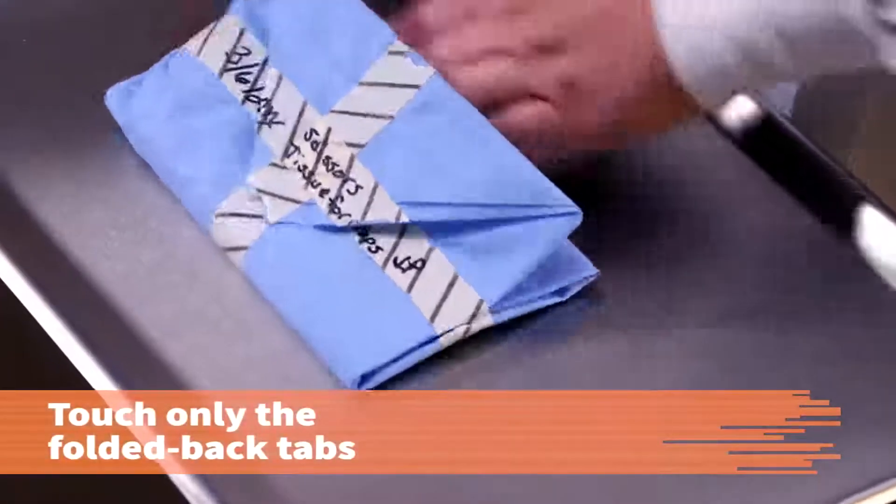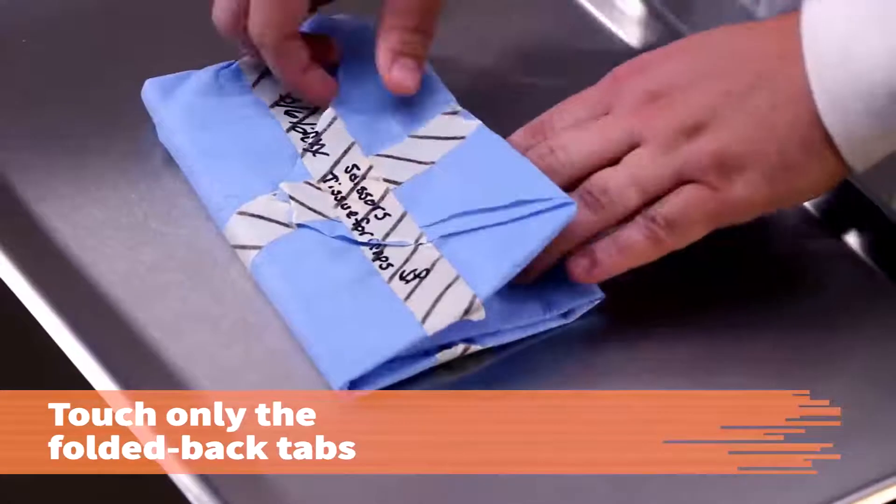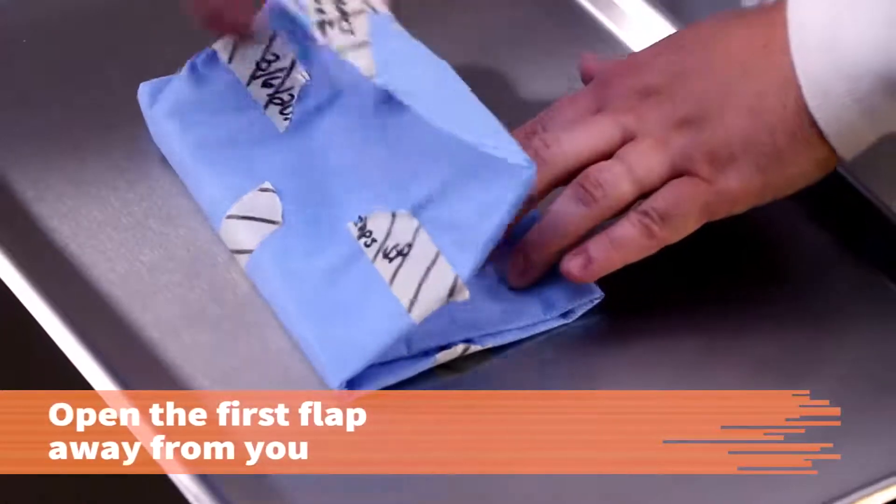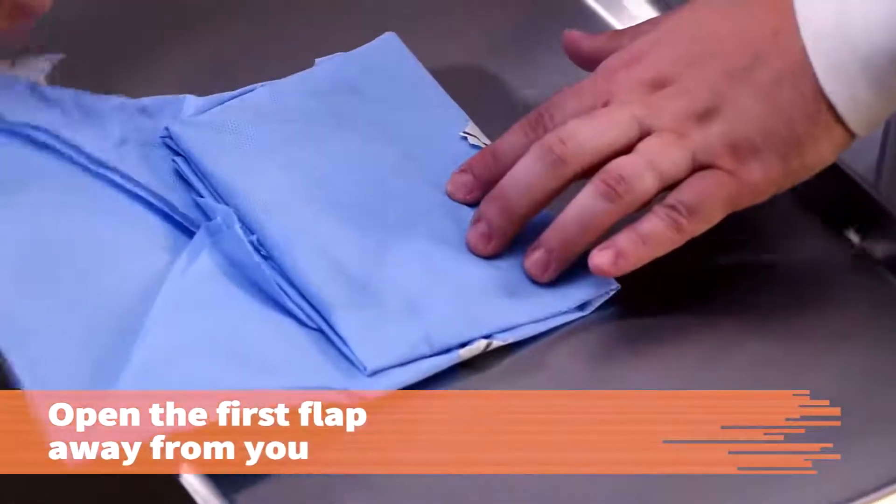Carefully lift each flap by touching only the folded back tabs, without touching or crossing over the inner surface of the pack or its contents. Next, open the first flap away from your body.